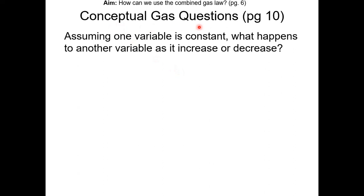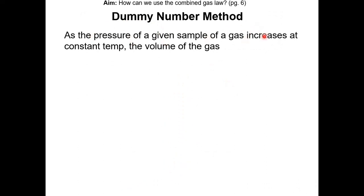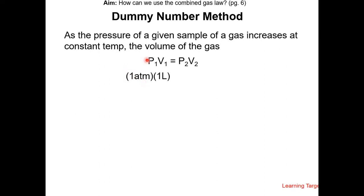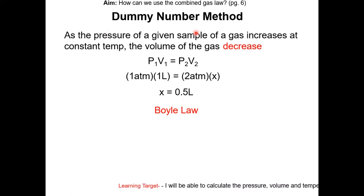In the last part of the lesson, we'll go over conceptual gas questions. Assuming one variable is constant, what happens when another variable increases or decreases? I'll show you the dummy number method, where we use simple numbers to solve conceptual questions. For example: as the pressure of a given sample of gas increases at constant temperature, the volume does what? Since temperature is constant, we ignore it. Set initial pressure and volume both to 1. Since pressure is increasing, set new pressure to 2. Solving for new volume x gives 0.5 — the volume decreased by half. So as pressure increases at constant temperature, volume decreases. This is Boyle's law.